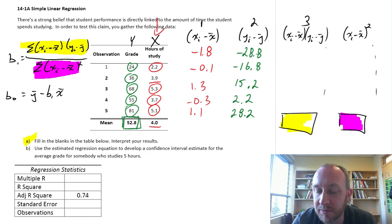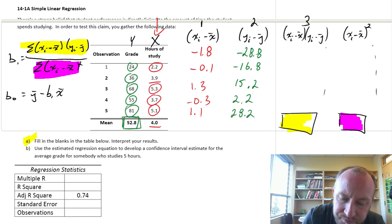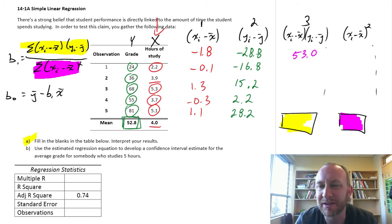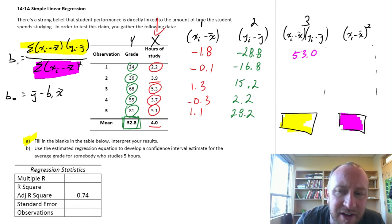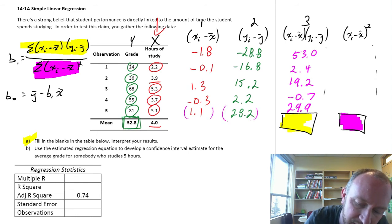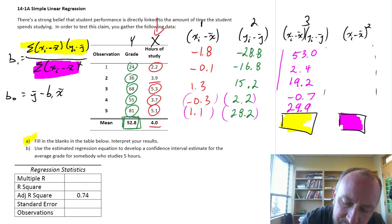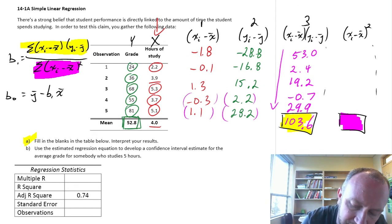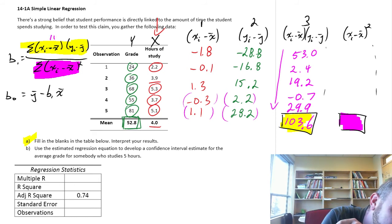Now we've got two parts of our puzzle. Column 3, now we just need to multiply those together. So this will be 1.8 times minus 28.8. This will give us 53.0. Might be some rounding error in here. I'm just going to keep everything to one decimal place. We don't have to be exceedingly precise. Just keep it simple. This one, minus 0.1 times minus 16.8, this will be 2.4. The next one, 19.2. Minus 0.3 times 2.2, minus 0.7. And the last one, minus 29.9. So here, I'm just multiplying all of these things together. And then if we add up down this column, all of our pink values, that gives us 103.6. So there's our numerator.